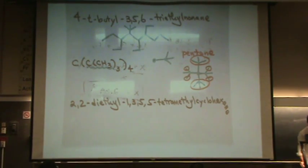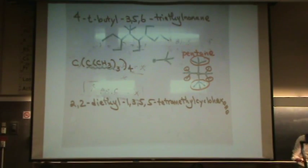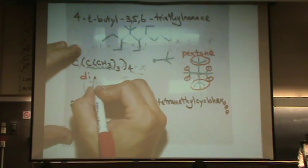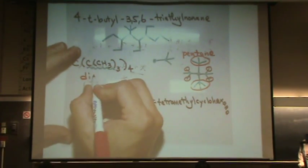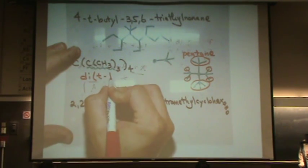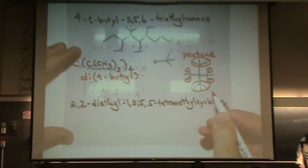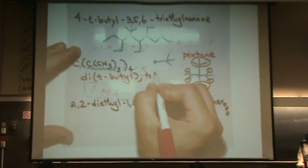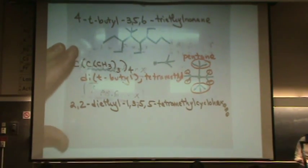So the middle ones are both t-butyls. And these ones on the edges are methyls. So there's two t-butyls. So that would be di. And there's two ways you could have done it. On my exam, I'm not going to care. I think technically you would put parentheses. But if you didn't put parentheses, that's fine. And then there's one, two, three, four. So that's a tetramethyl.